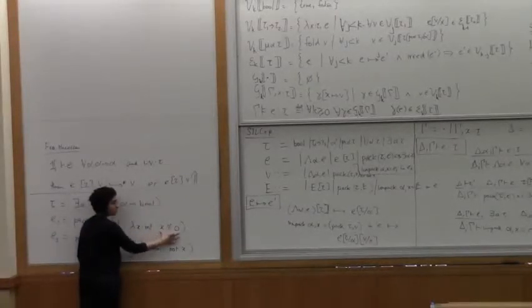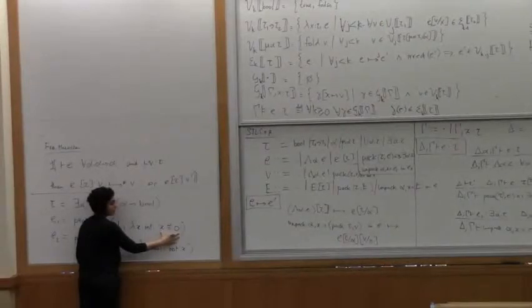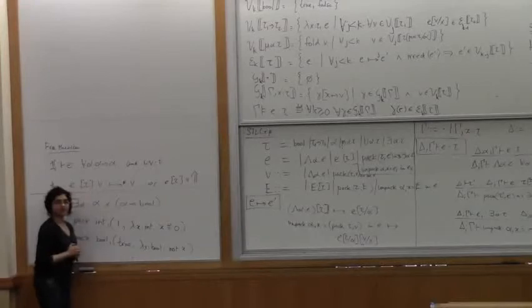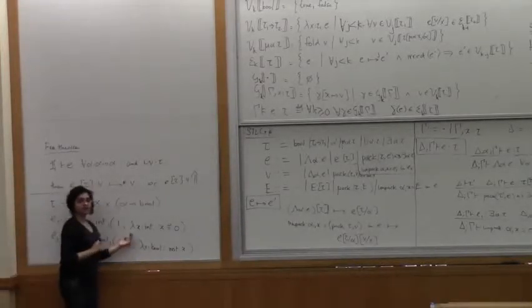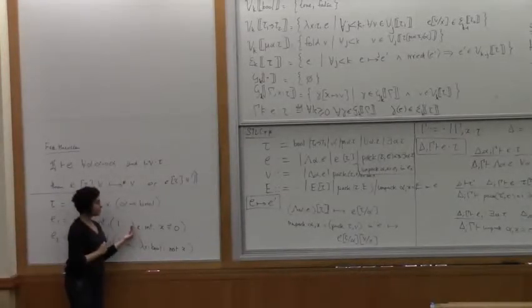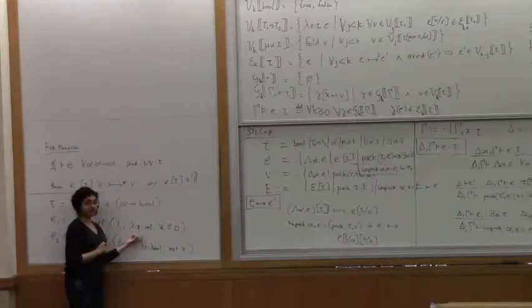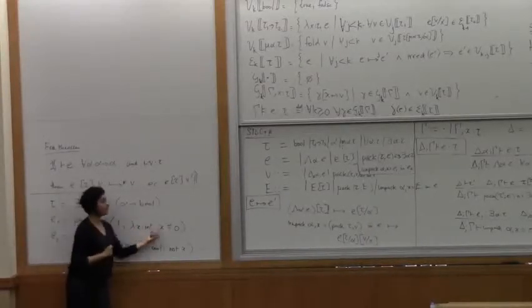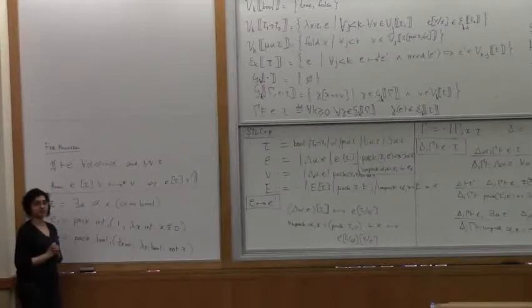So when we evaluate the function, it'll apply to one. We'll be checking whether one is equal to zero, and we'll get false. So if you can ever call this function, if you can ever apply this function to anything, it'll always be this one, and therefore, the function will always return false.